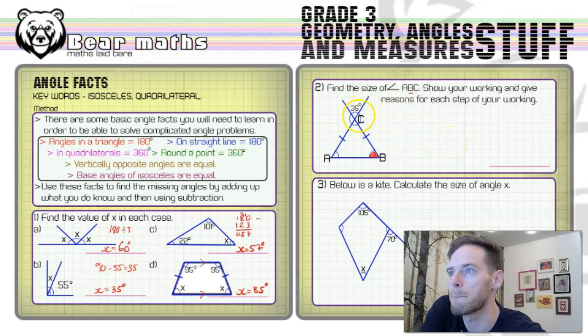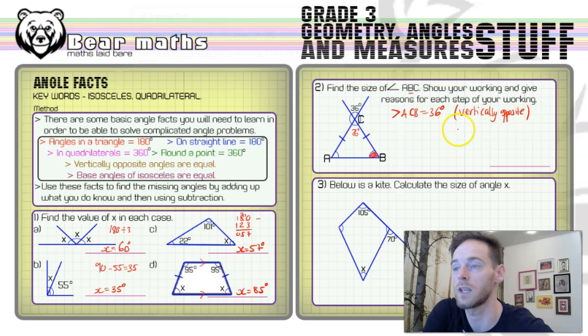So this angle here is 36 degrees at the top. That's all we've been given. Now, the one opposite or vertically opposite is also 36. So that's the first thing that we can do. Say angle ACB equals 36 degrees. And then I like to put it in brackets, just put vertically opposite. You could write vertically opposite angles are equal if you wanted to, but vertically opposite will do because we've shown that it's equal by saying that it's 36 degrees.